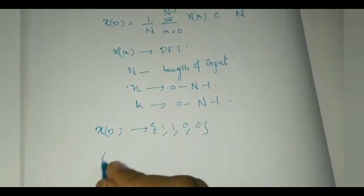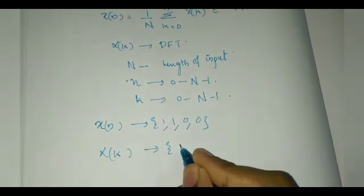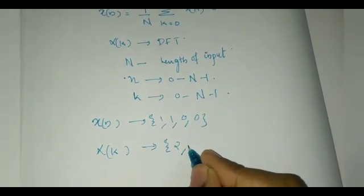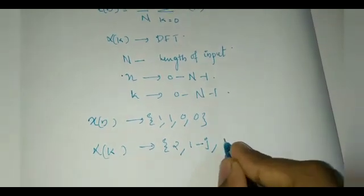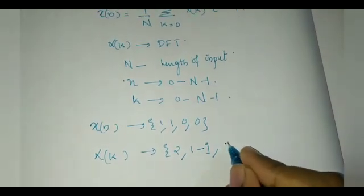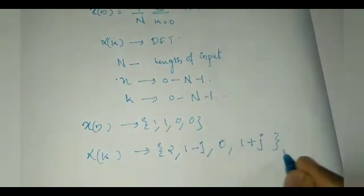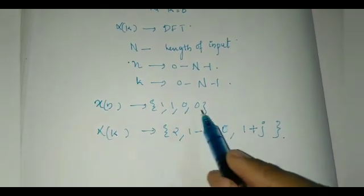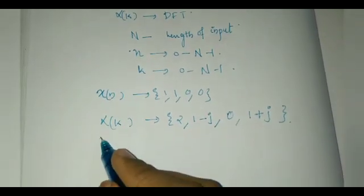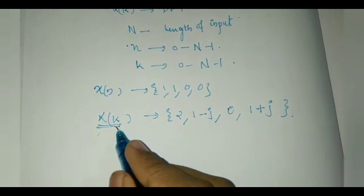And I have obtained the result x of k as the set {2, 1 minus j, 0, and 1 plus j}. This was my DFT result which I obtained for the sequence {1, 1, 0, 0}. Now I am going to find the IDFT of this x of k.